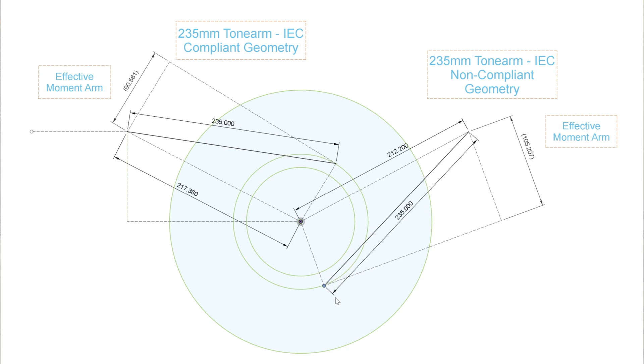When they meet at the chosen innermost groove radius of the non-compliant tone arm designer, there's a good 15% difference.